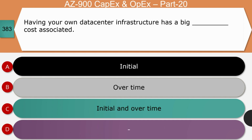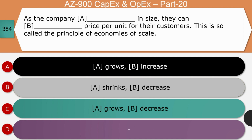Having your own data center infrastructure has big costs associated — is it initial, over time, or initial and over time? The right answer is initial. Your own infrastructure means you need to purchase servers, invest in the server room, cooling, networking, etc. This costs a lot of money upfront. Later, your costs are relatively low once you are comfortable with the data center. So the right answer is option A.